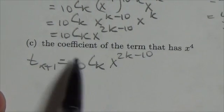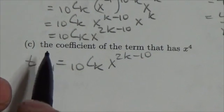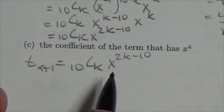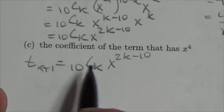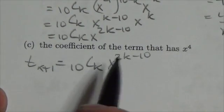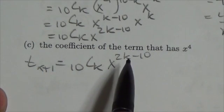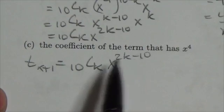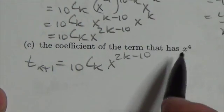Okay, now what I want to do here is I want to find the coefficient of the term that has x to the 4 in it. So this is my general term—every term in the expansion looks like this, the only thing that differs is the value of k. So what I'm really asked to find here is what is the k when this becomes x to the fourth.